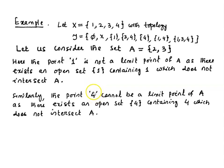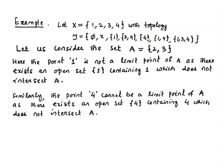Similarly, if we consider the point 4, we have open sets containing 4 such as {4}, {1,4}, and {1,3,4}. Some of these open sets intersect A, but we have one open set containing 4 which does not intersect A — the singleton set {4} itself is an open set in the topological space which contains 4 and does not intersect A. So point 4 cannot be a limit point of A.